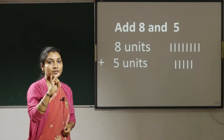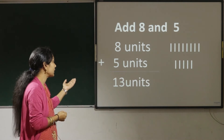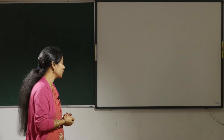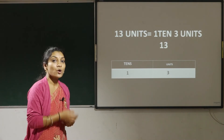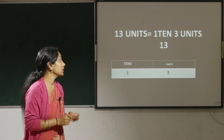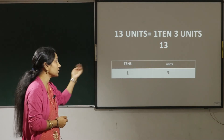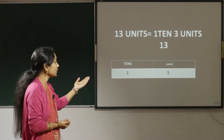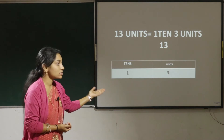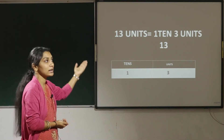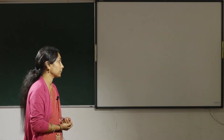After 8: 9, 10, 11, 12, 13. So 8 plus 5 is 13 units. 13 units means 1 ten plus 3 units, so the number is 13. 13 can be split into tens and units: in the tens place you write 1 and in the units place you write 3.